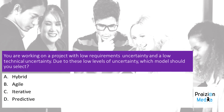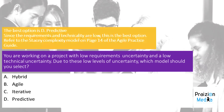The best option is D. Predictive, since the requirements and technical uncertainty are low. This is the best option. Refer to the Stacy Complexity Model on page 14 of the Agile Practice Guide.